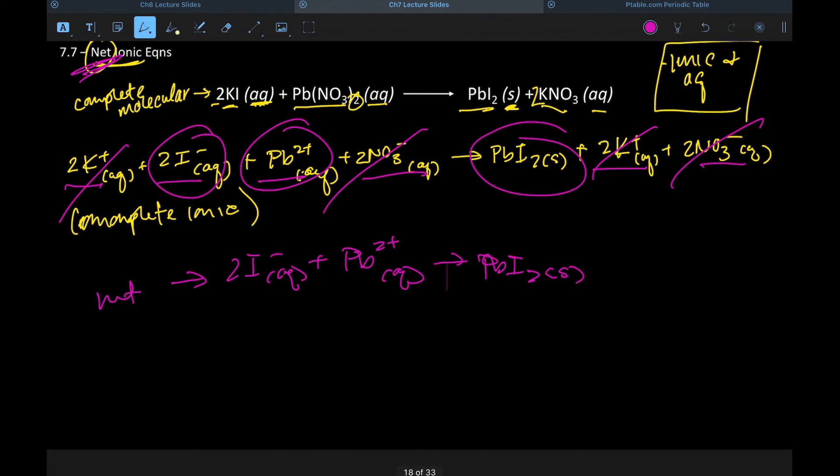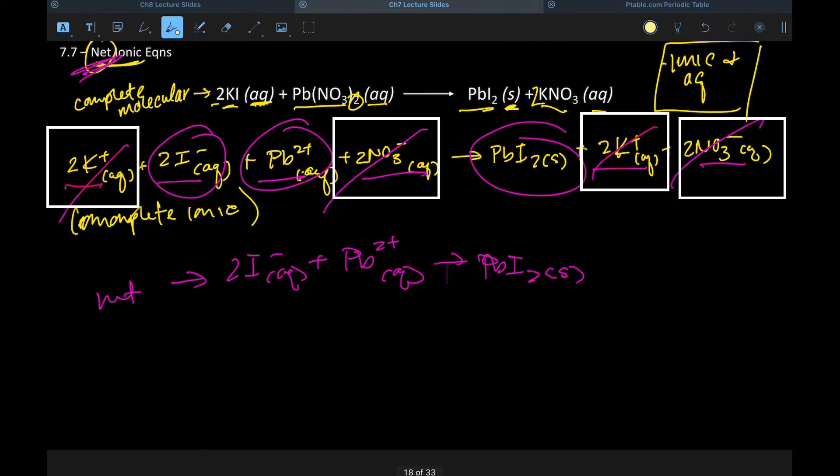That is what actually changes during the course of the reaction. And if we think about what that means, these don't change. This stays the same. This stays the same. Does that make sense? As in there are potassium ions floating before, there are potassium ions floating around after. No net change there. And that would be our final answer.